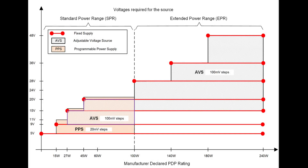This chart shows standard power range and extended power range. The red-marked fixed voltages are 5V, 9V, 15V, 20V, and 28V. The extra 36V and 48V are the latest additions. Up to 100W is called standard power range; beyond that is extended power range — 140W, 180W, or 240W. These are all called extended power range. This is very important and the latest development — upcoming gaming laptops will have up to 240W via Type C at 48V.